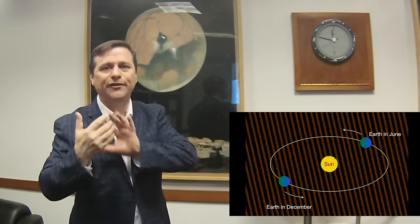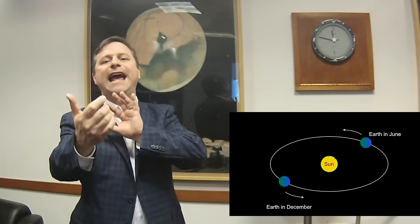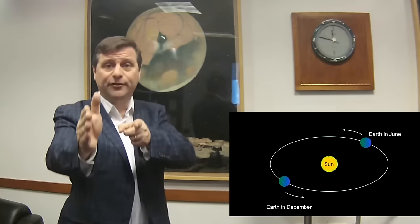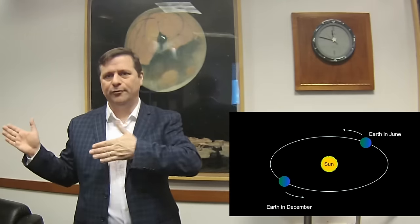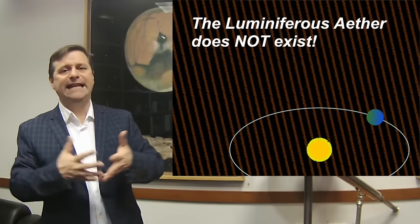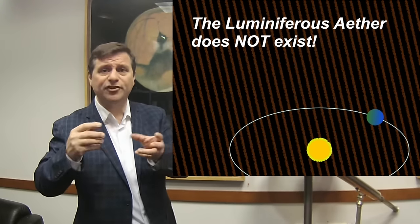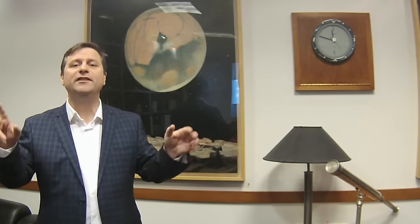There was no ether wind, meaning there was no adding of the Earth's speed onto the speed of light through the luminiferous ether. The luminiferous ether was effectively disproved in 1887 by Michelson and Morley — they were looking for the change in speed of light as the Earth moved through this imagined luminiferous ether and discovered that it didn't exist. That's an amazing discovery.